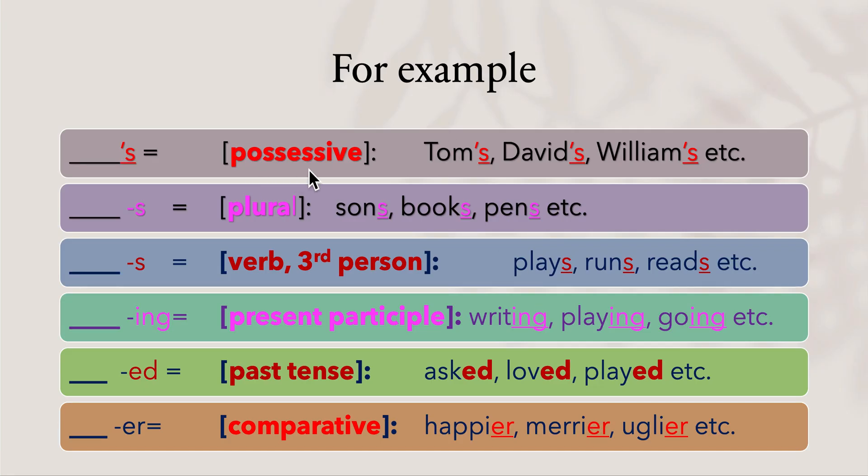For example: Possessive apostrophe 's': Tom's, David's, William's, etc. Plural '-s': sons, books, pens, etc. Verb third person '-s': plays, runs, reads, etc.